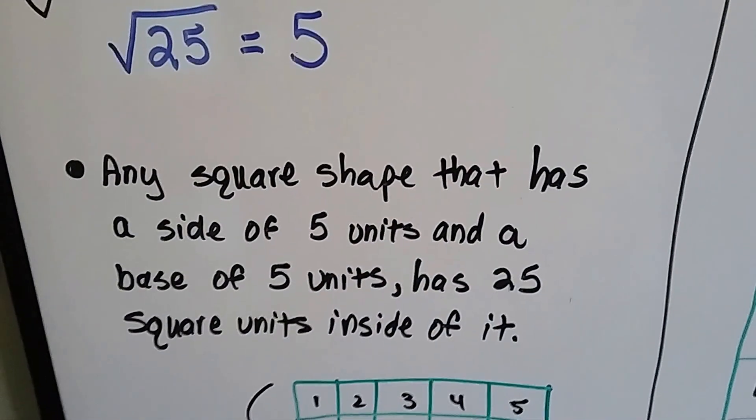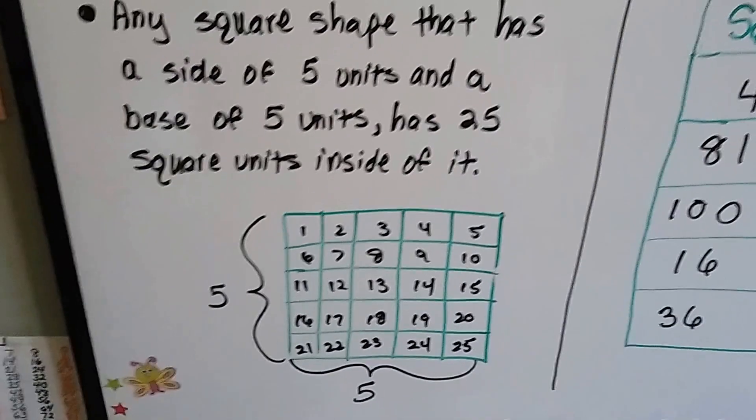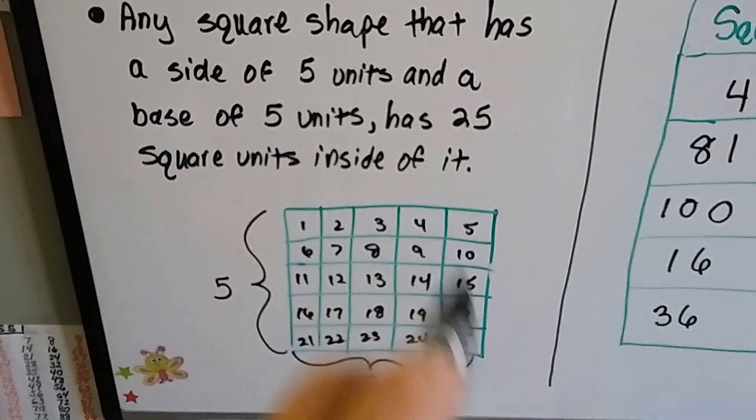Any square shape that has a side of 5 units and a base of 5 units has 25 square units inside of it. 5 times 5 is 25.